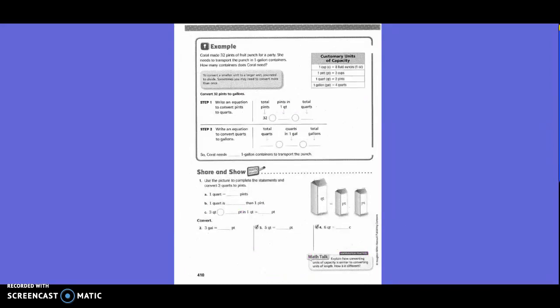Example: Coral made 32 pints of fruit punch for a party. She needs to transport the punch in one gallon containers. How many containers does Coral need? Over here they've given us a little chart that tells us how many ounces are in a cup, how many cups are in a pint, how many pints are in a quart, and how many quarts are in a gallon. To convert a smaller unit to a larger unit, you need to divide. And sometimes you need to convert more than once. Just like yesterday, smaller unit to larger unit, you're going to divide. Larger unit to a smaller unit, you're going to multiply.